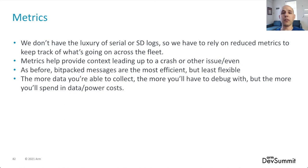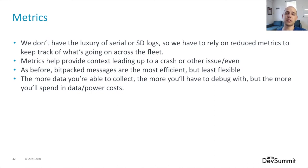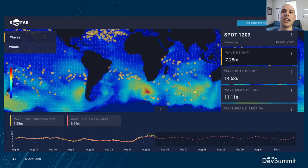One of the other ways to troubleshoot systems is just with metrics. We don't have SD card logs anymore, so we're relying on information we've been sending and receiving. The more data we have, the easier it is to figure out what went wrong. Even if a unit stops transmitting, we can look back and see what it was transmitting before it died. Here's an example of a wave heights dashboard that tells you what's going on with a particular unit anywhere in the world.